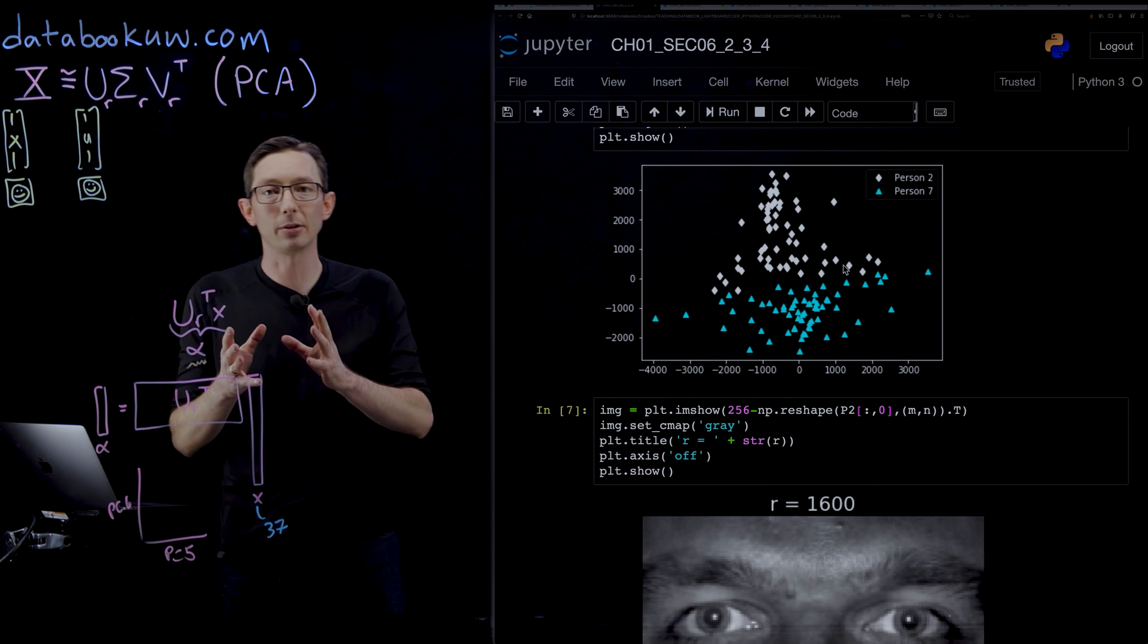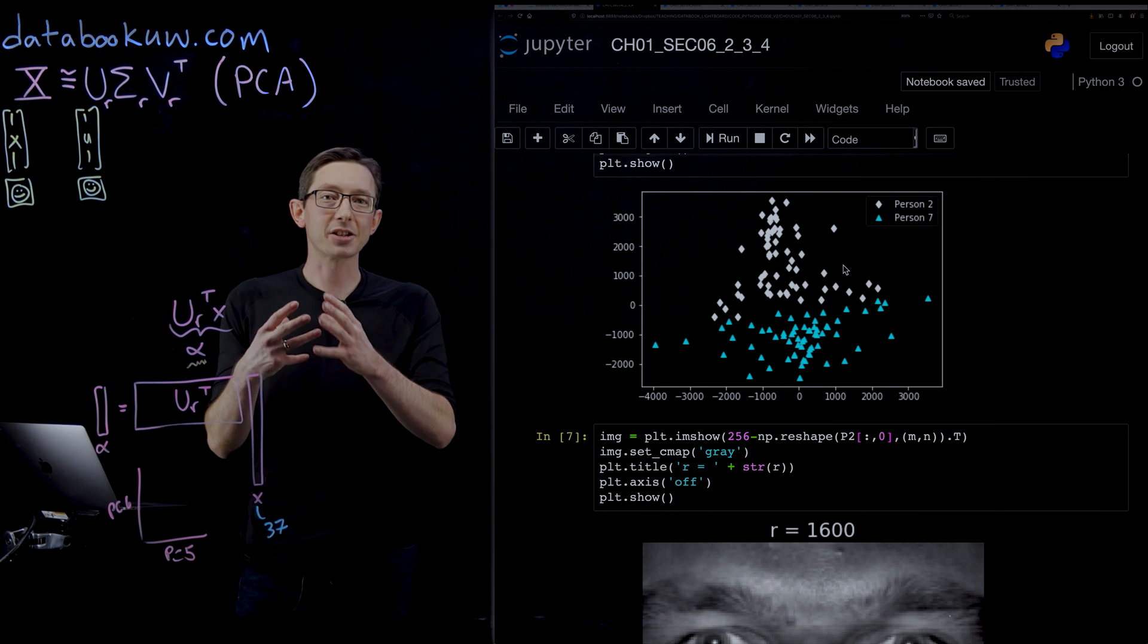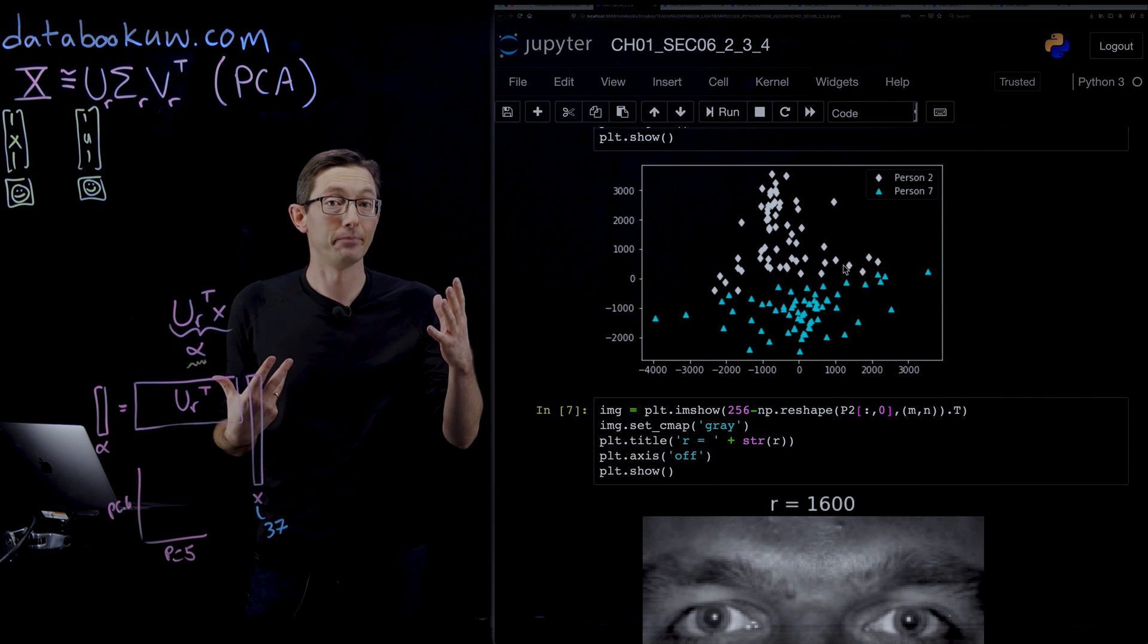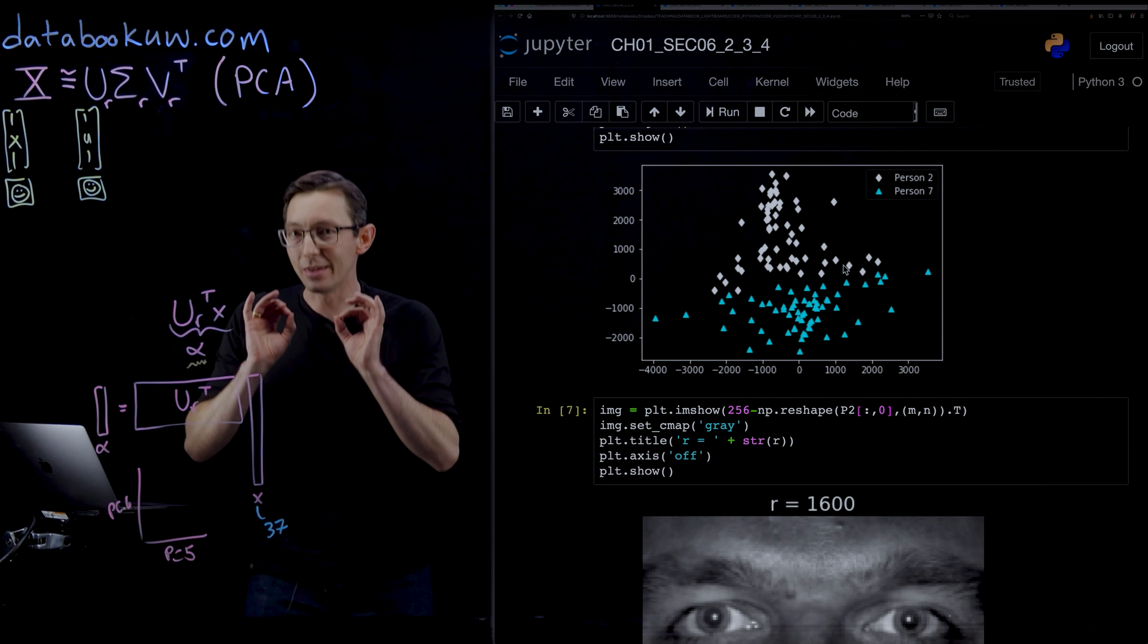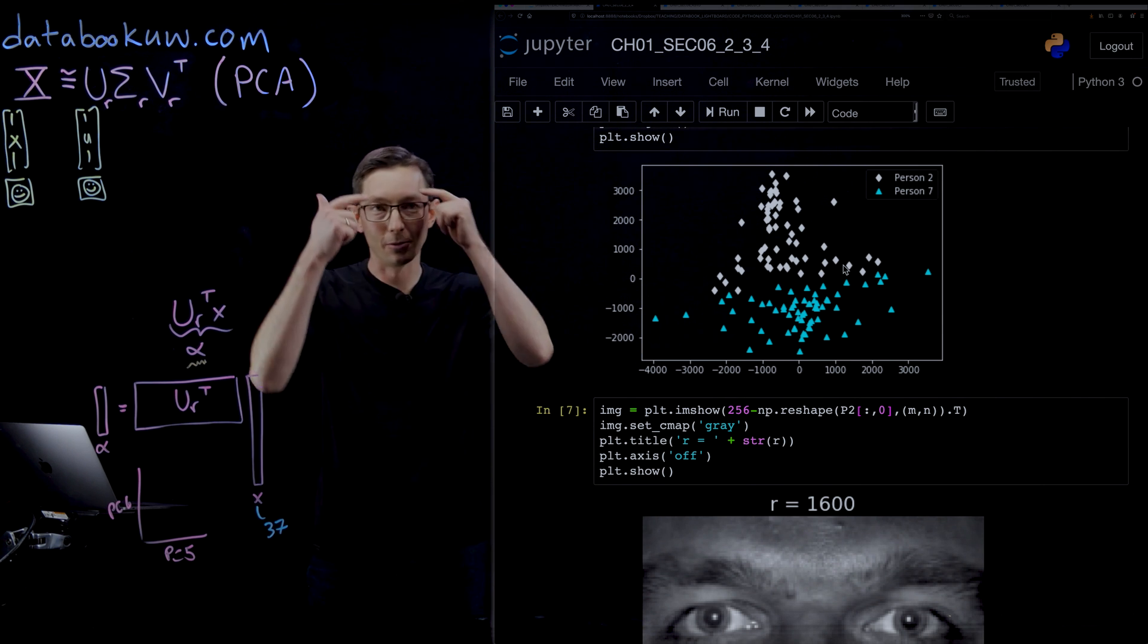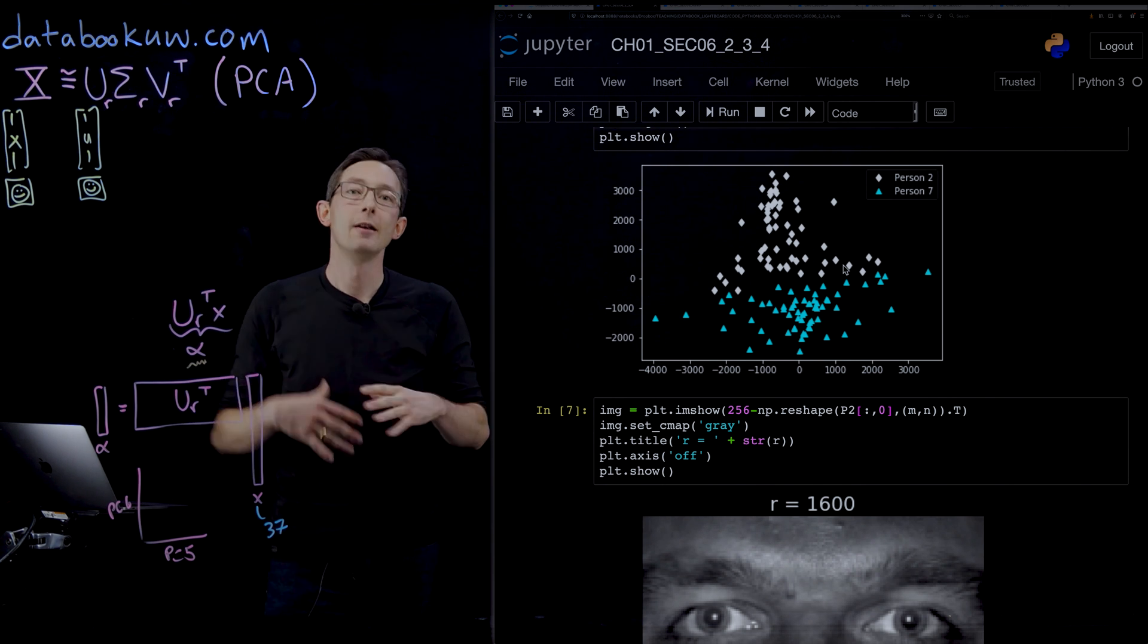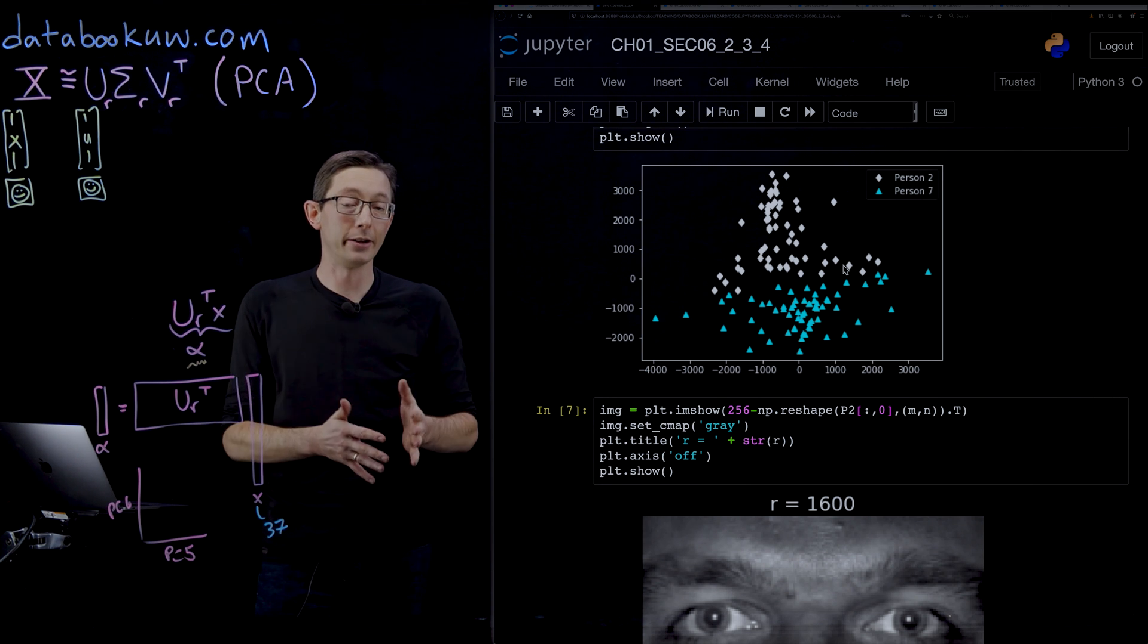The first three principal components that capture the most variance in this data are actually the information that most of us have in common. The information that is different from person to person—different geometry of the eyebrows and the nose and the spacing of the different features—that's encoded in the lower energy singular values four, five, six, and so on.